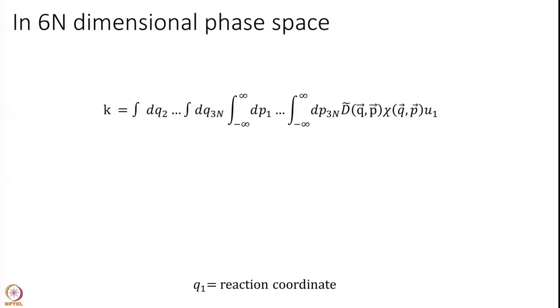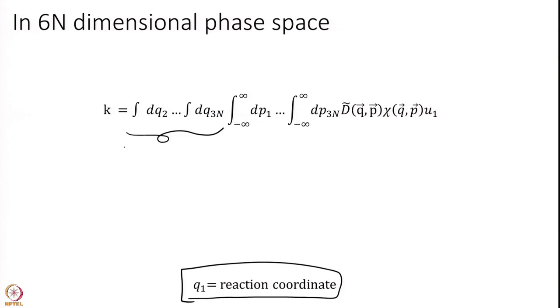In the last module we ended with a particular formula for the rate constant. We had integrated over all coordinates that are not the reaction coordinate. So we have one coordinate that we call the reaction coordinate, and this is an integration over the dividing surface. I am sitting at a transition state — one coordinate is my reaction coordinate, and every other direction is perpendicular to this and constitutes my dividing surface.